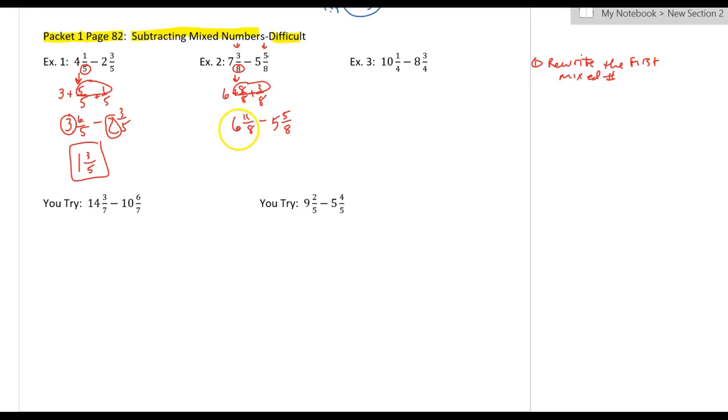So now, subtract my whole numbers, six minus five is one, eleven-eighths minus five-eighths is six-eighths. But now, if I look, can six over eight be reduced? Yes, so this becomes one, and six and eight can both be divided by two. Six divided by two is three. Eight divided by two is four. So it's one and three-fourths.